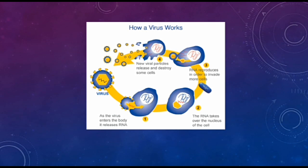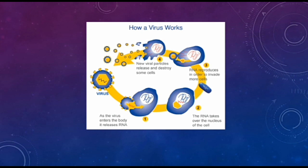A virus enters the human body and releases its RNA. In the second step, the RNA takes over the nucleus of the cell — the virus attacks the nucleus. In the third step, the RNA reproduces in order to invade new cells; the RNA inside the nucleus starts replicating itself to make new viruses so they can attack new cells. In the fourth step, new viral particles are released and destroy the cell, so that they can invade other cells.